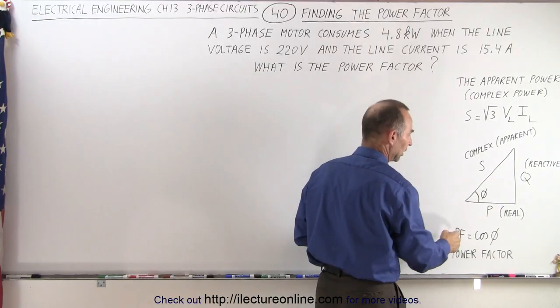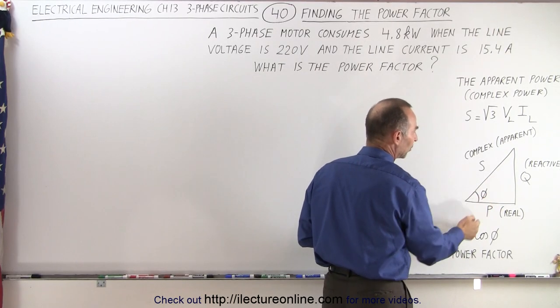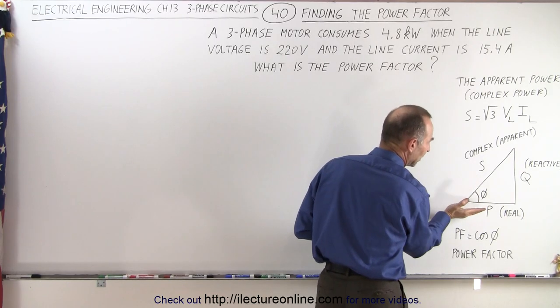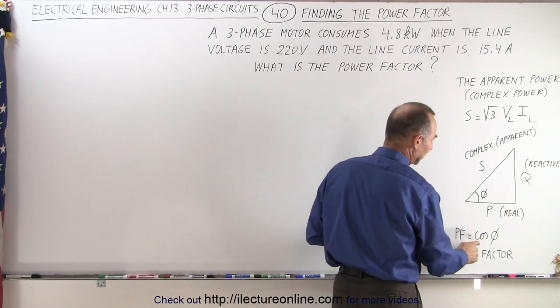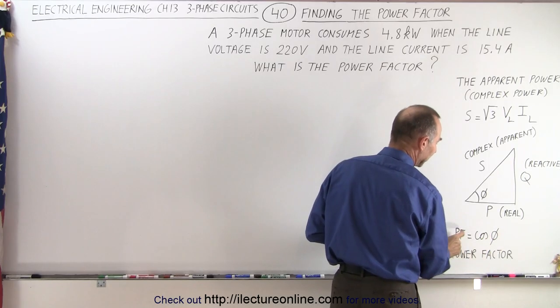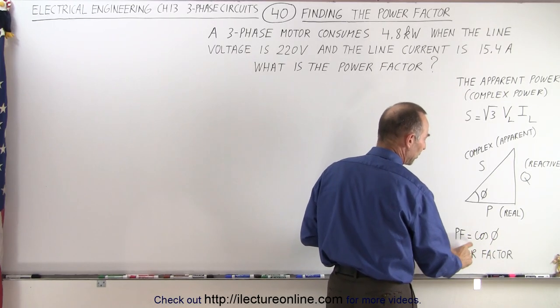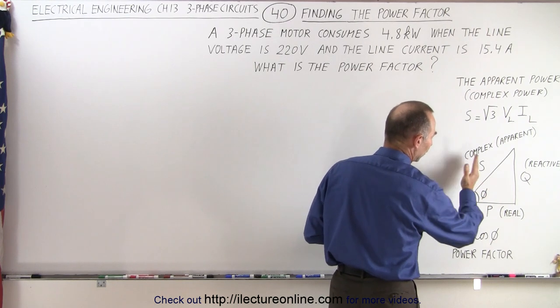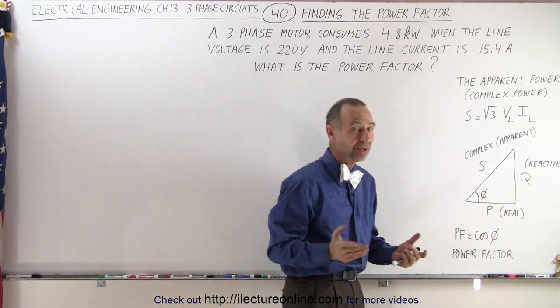Notice the relationship here is that this is the phase angle between what we call the complex power and the real power. And if we take the cosine of the phase angle, that is the power factor. The power factor varies from one when the phase angle is zero to zero when the phase angle is 90 degrees.